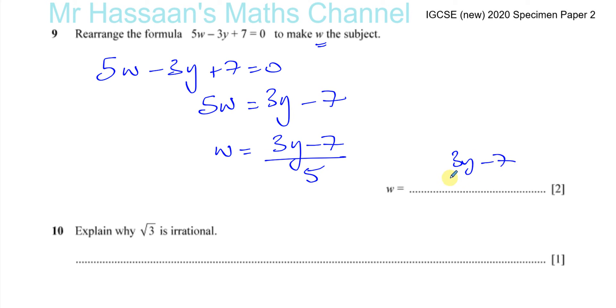So 3y minus 7 over 5, write your answer in the answer space. Okay, simple rearranging of formulae.